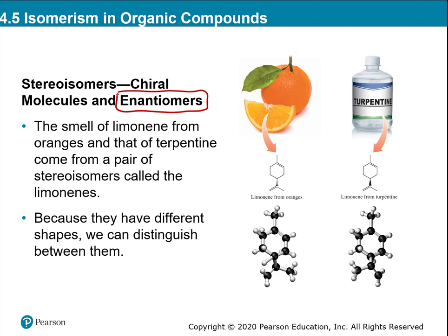One example is limonene — when you smell this, it gives you the smell of a freshly peeled orange. Your receptors in your nasal passages detect that molecule and your brain recognizes the freshly peeled orange smell. The other form of this molecule is turpentine — a very strong smelling solvent used to strip old varnish off wood, very different in terms of its effects.